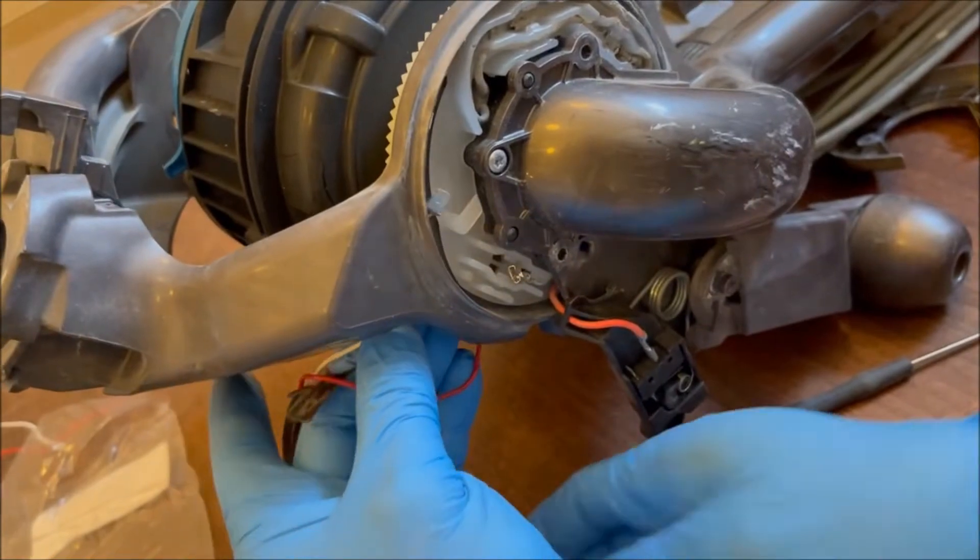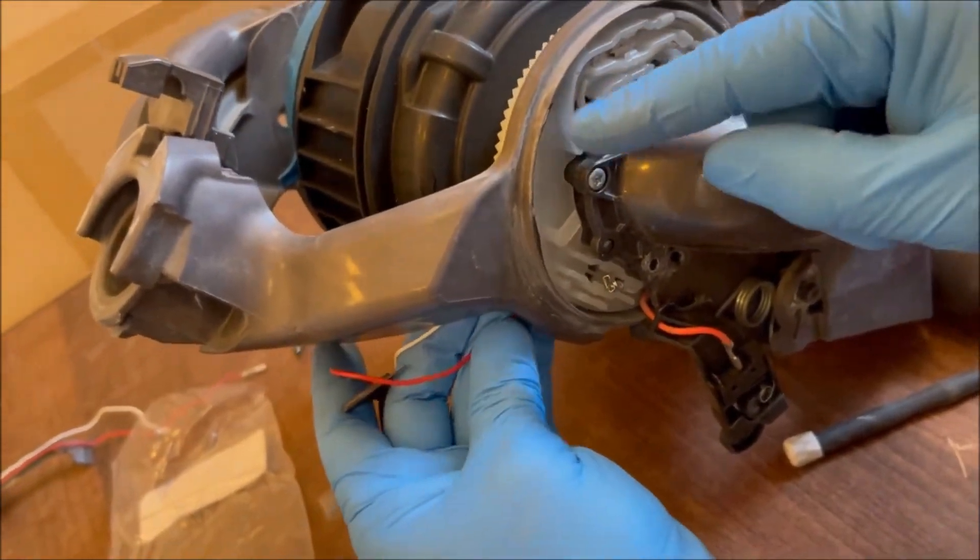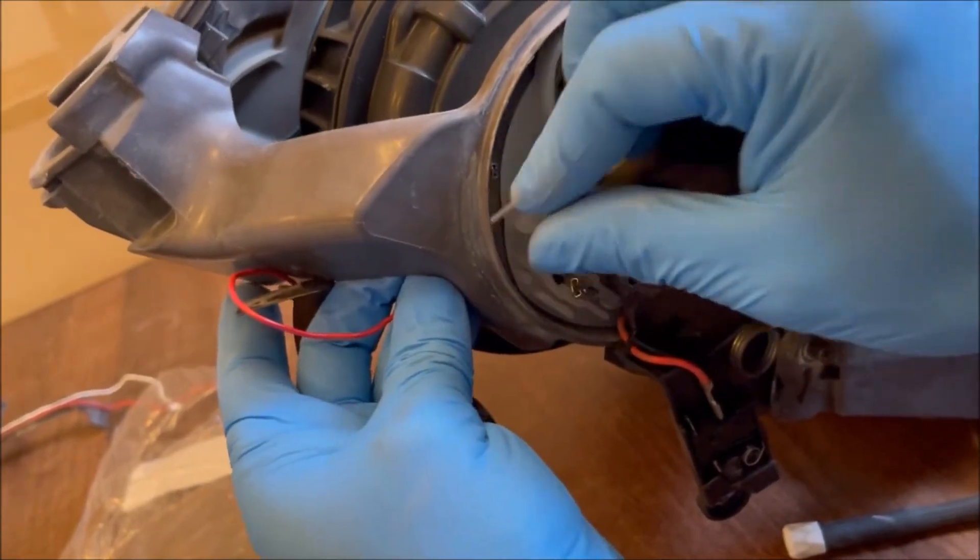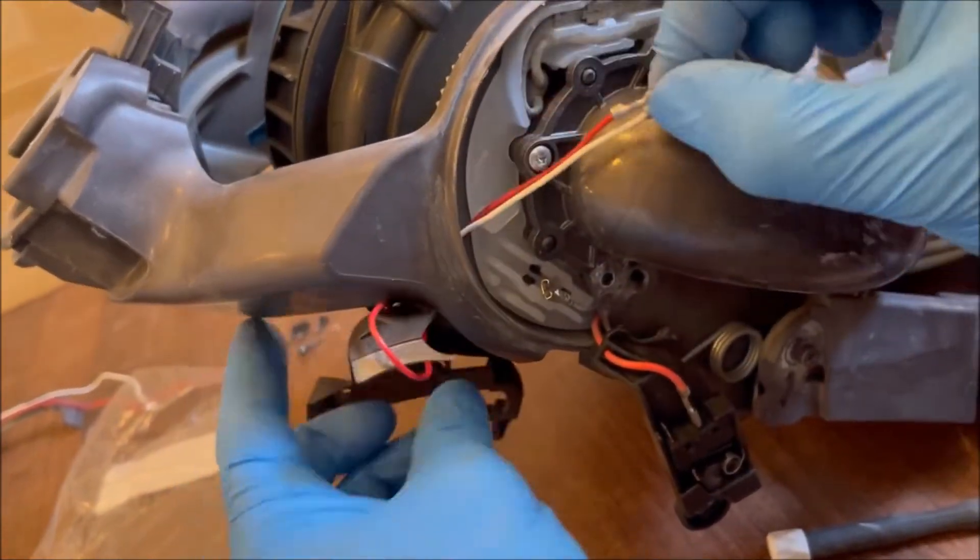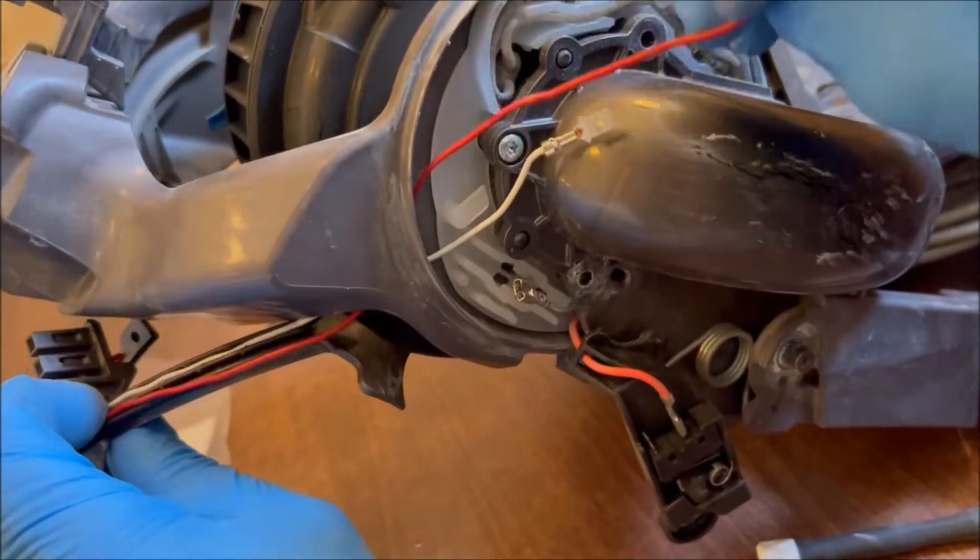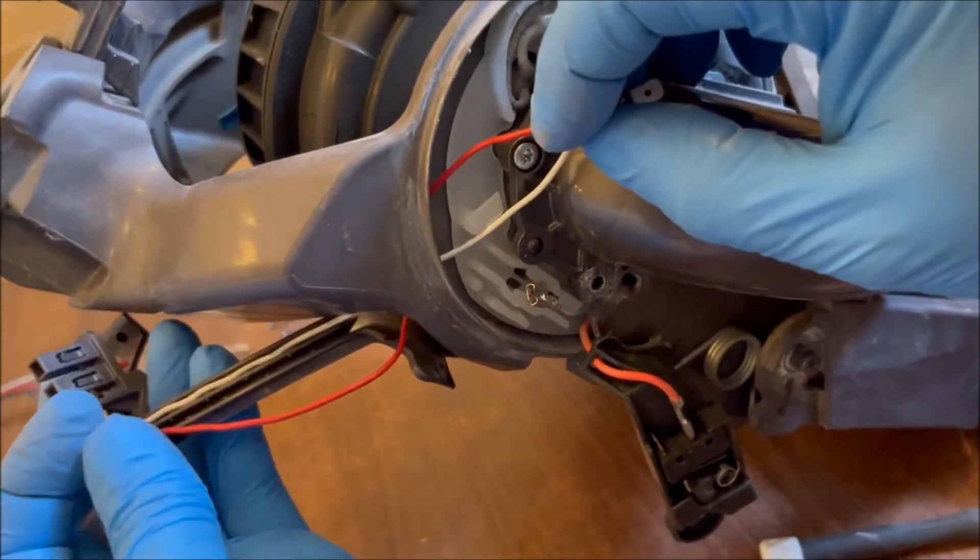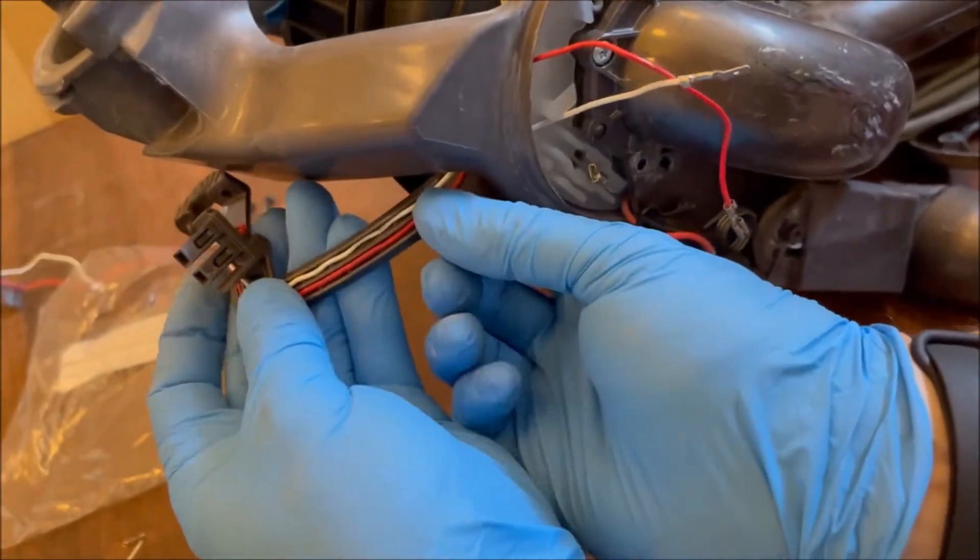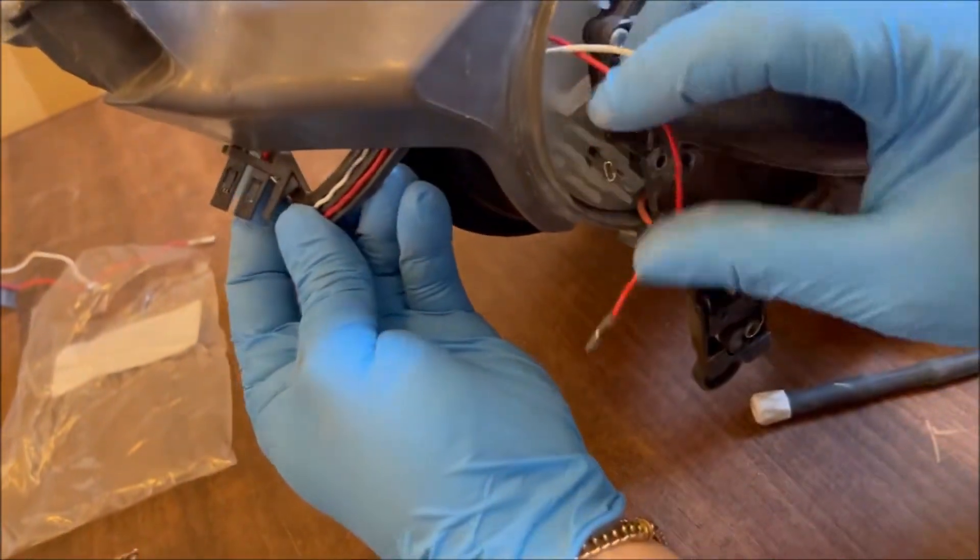So observe where the wires feed back through. You see that red one's come out there and it needs to go back in. Otherwise you won't be able to refit that carrier. Make sure those wires stay in that little track.